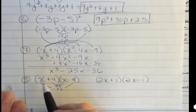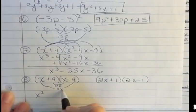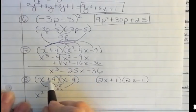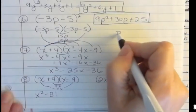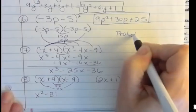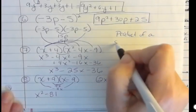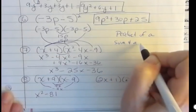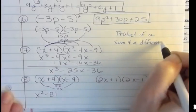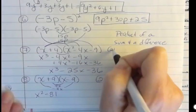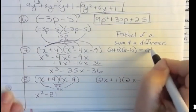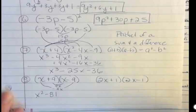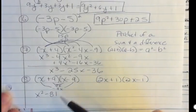And then 9 times 9 is 81, but one's a plus and one's a minus, so negative 81. So when you're doing what we call a product of a sum and a difference, that is we have a plus b and a minus b, what you're going to end up with is a squared minus b squared, because those middle terms drop out.